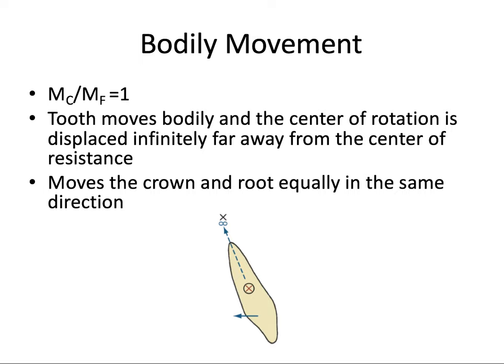For bodily movement, the MC:MF ratio equals 1 — the moment of a couple equals the moment of a force. The tooth translates, and the center of rotation is displaced infinitely far away because there is no rotation. The crown and root move together the same amount in the same direction. This requires both a force to move the crown and a fairly strong couple to prevent tipping altogether, which is why bodily movement is one of the more difficult and slower movements to achieve.